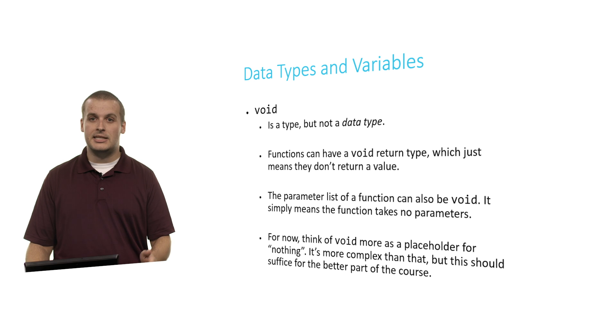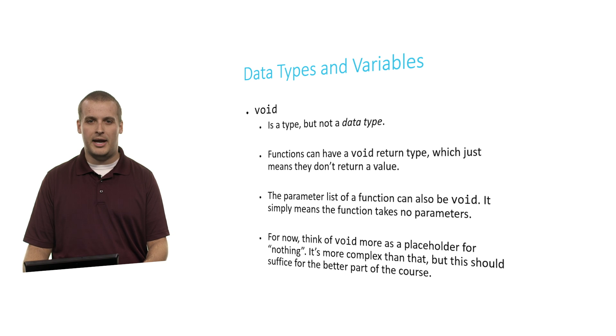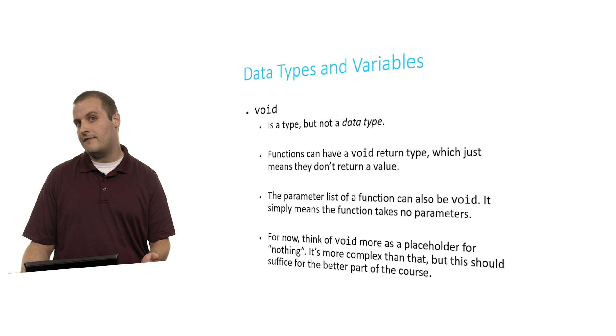Void is not a data type — it's a type, and I'm talking about it because we've probably seen it a few times already in CS50. Void does exist, but we can't create a variable of type void and assign a value to it. Functions, however, can have a void return type — it means the function doesn't return a value. printf is one example: it prints something to the screen as a side effect, but it doesn't give you a value back. So we say printf is a void function — it returns nothing.